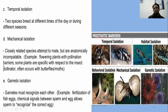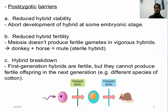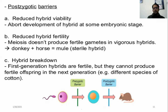Gametic isolation refers to barriers at the gamete level. Postzygotic barriers include hybrid viability — where hybrid vigor may be produced — and reduced hybrid fertility, where organisms are not fertile, like sterile hybrids. Hybrid breakdown means first generation hybrids are fertile but cannot produce fertile offspring in the next generation. For example, different species of cotton show this breakdown in the next generation.